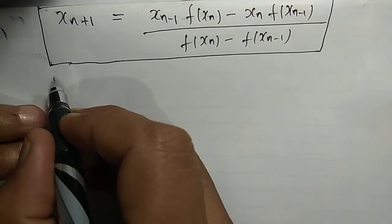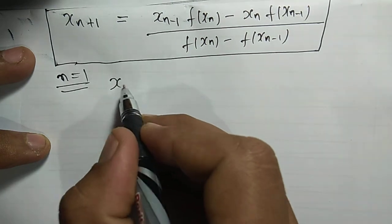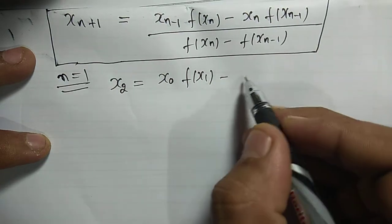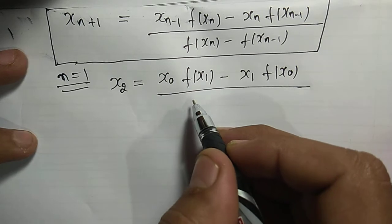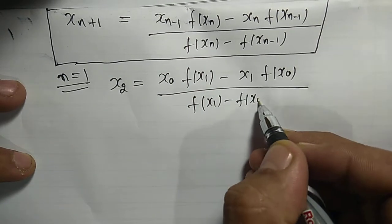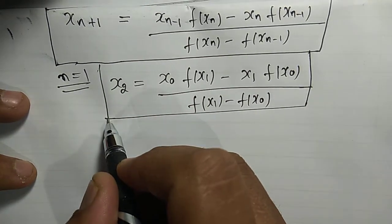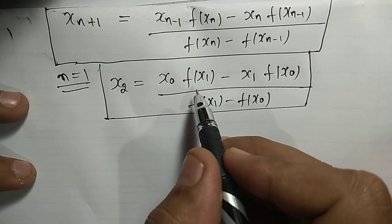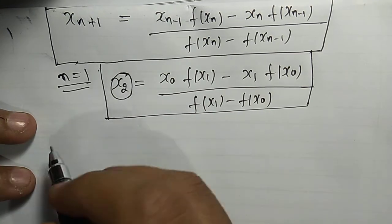Now let us set n = 1. We get: x_2 = [x_0 · f(x_1) − x_1 · f(x_0)] / [f(x_1) − f(x_0)]. So here we need two initial guesses, x_0 and x_1, to start the iteration. x_2 is the solution for the first iteration.